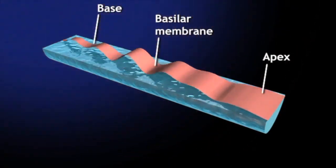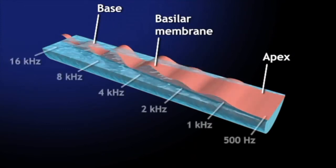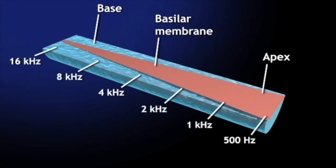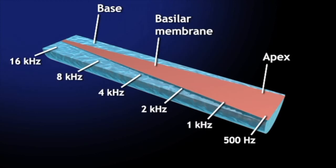These vibrations in the different parts of the basilar membrane establish a place code for sound frequency. This is because different locations on the membrane are maximally deformed at different frequencies. This mechanism is responsible for neural encoding of pitch.